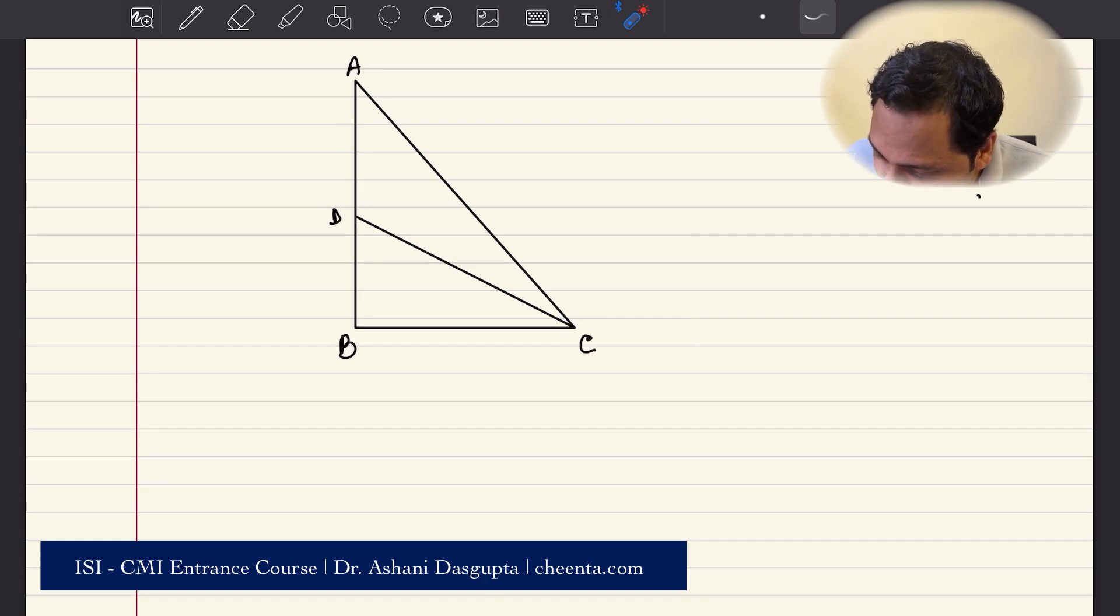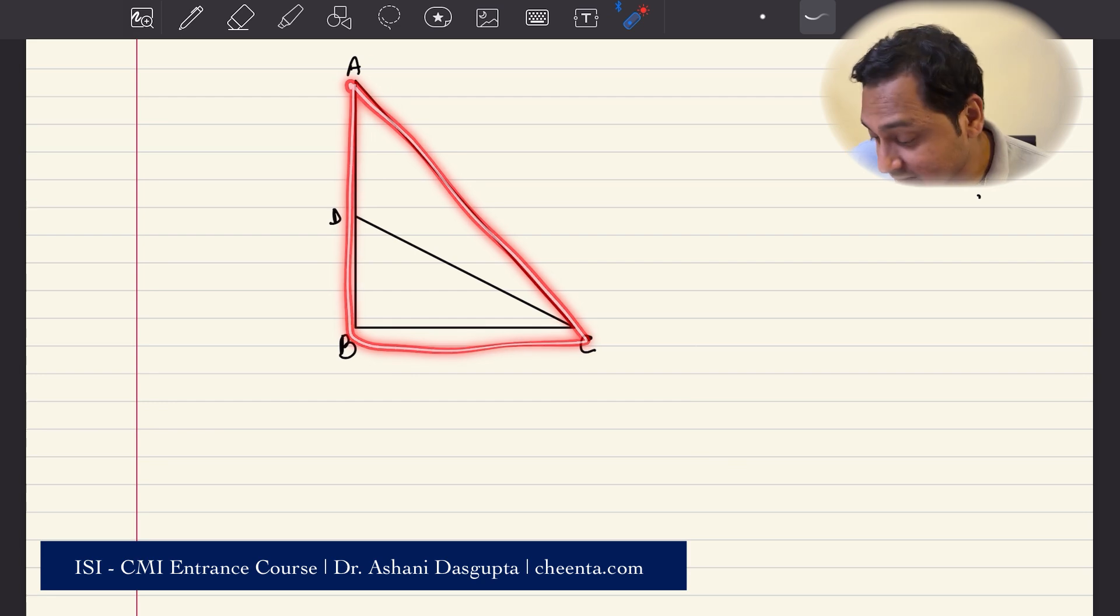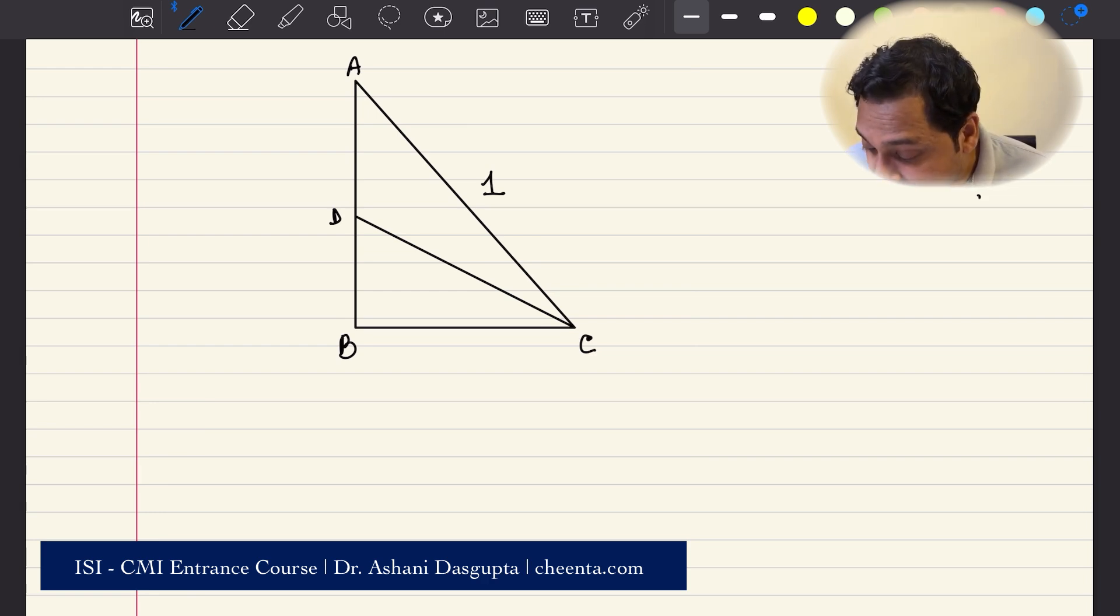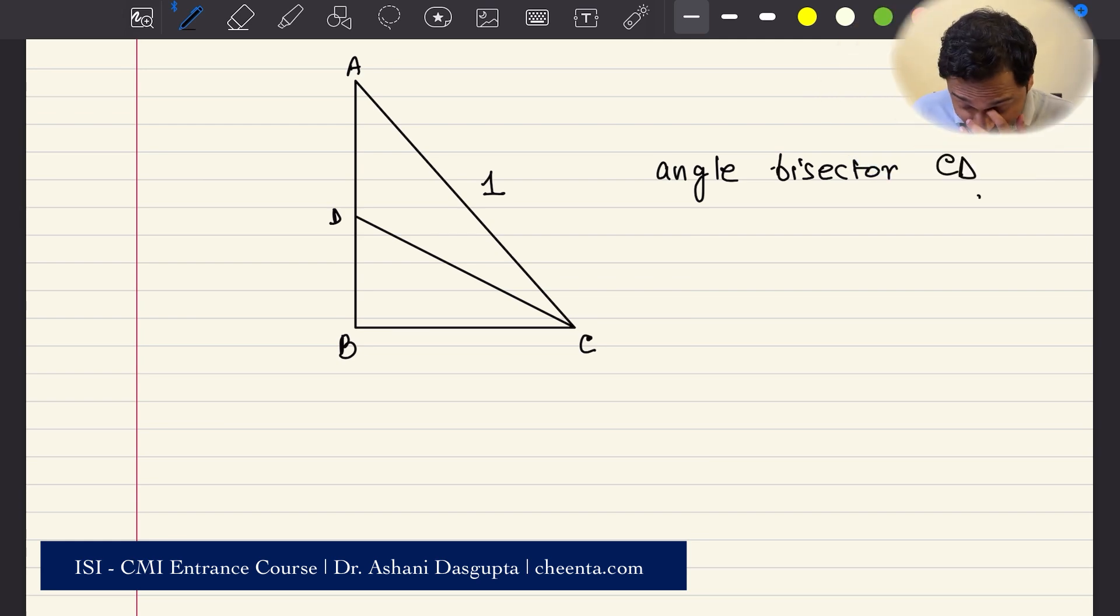The problem says that there is a right angle triangle. We have a hypotenuse AC whose length is given to be 1, and we have the angle bisector CD which hits the side AB at point D. It's also given that the length of BC is X. With this information, we have to find out the length of CD. That's the goal.